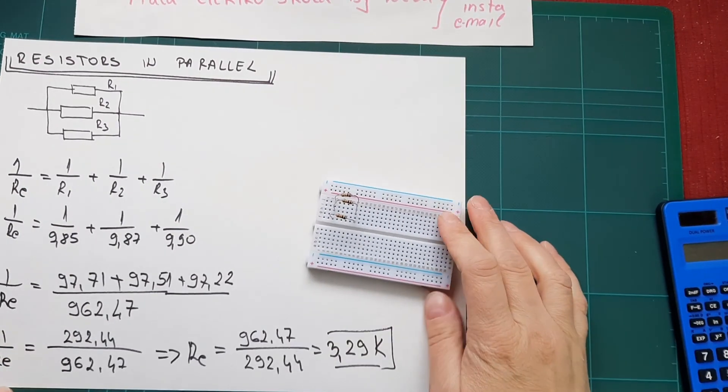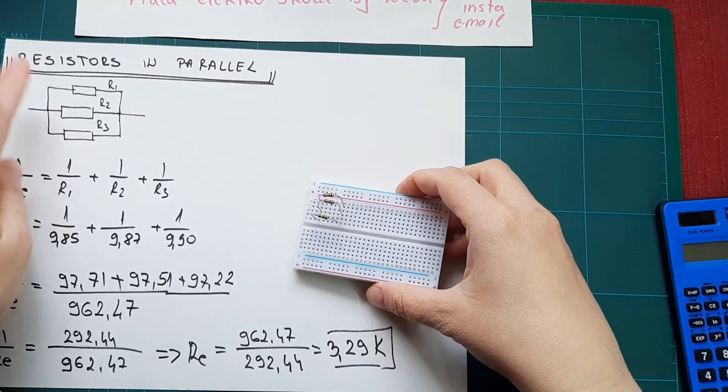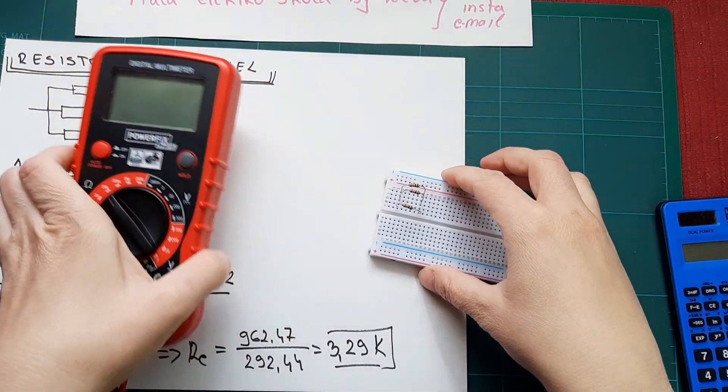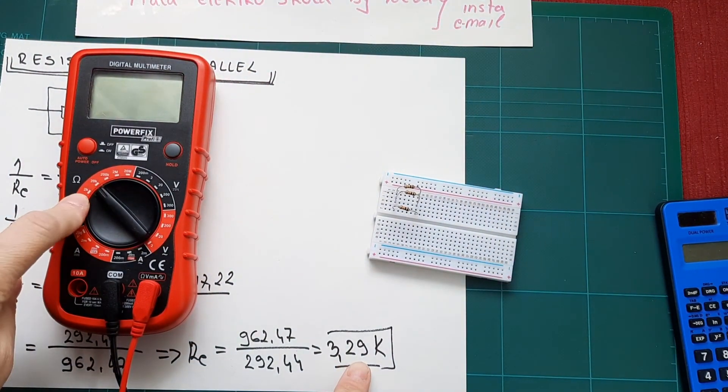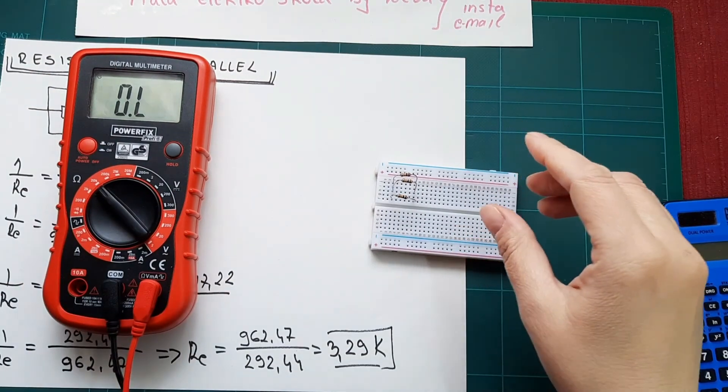Then we have parallel. This one is on the sketch and this one is on the board. Let's check the value. We have 3.29. Let's check our value.